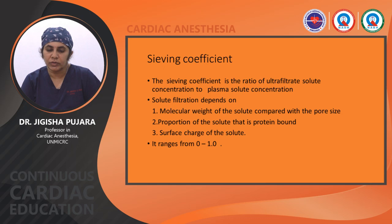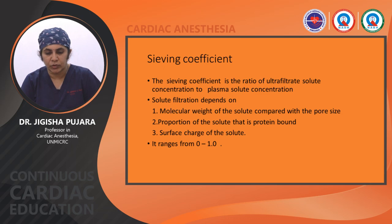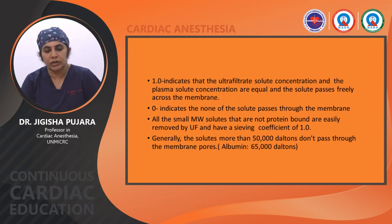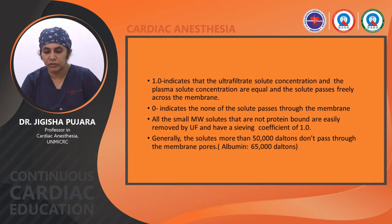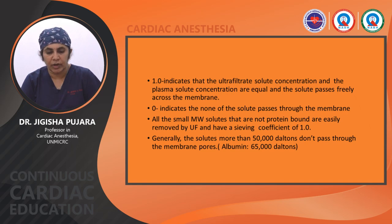The sieving coefficient is the ratio of ultrafiltrate solute concentration to plasma solute concentration. Solute filtration depends on molecular weight relative to pore size, proportion of the solute that is protein bound, and the surface charge of the solute. It ranges from 0 to 1. A value of 1 indicates that ultrafiltrate and plasma solute concentrations are equal and solute passes freely across the membrane; 0 indicates none of the solute passes through. All small molecular weight solutes that are not protein bound are easily removed and have a sieving coefficient of 1. Solutes more than 50,000 Daltons do not pass through membrane pores — for example, albumin at 65,000 Daltons cannot pass.